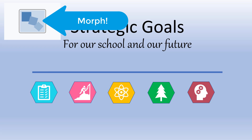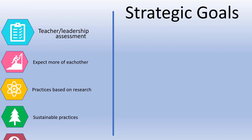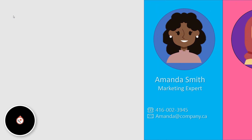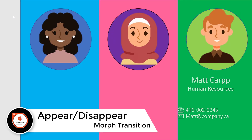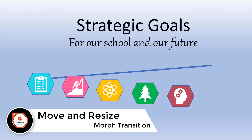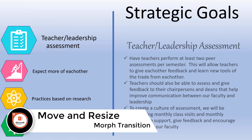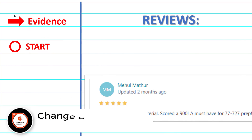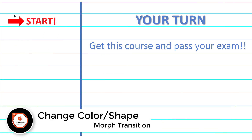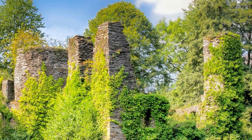In this video, I'm going to show you how to use the morph transition in PowerPoint so you can create animated PowerPoint slide designs. We're going to go over five major morph effects that you should know: how to make text or objects appear or disappear, how to move and resize objects, how to slide objects on or off your presentation, how to change the color and shape of objects, and using dynamic backgrounds with motion.